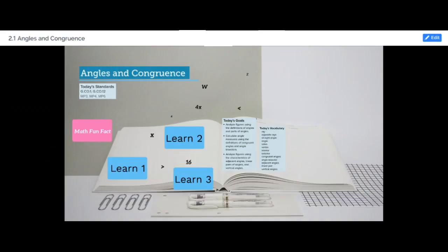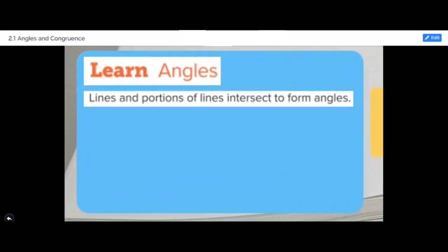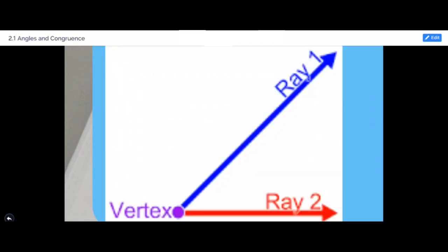In this video we are going to learn angles and how they are formed and also congruence. Lines and portions of lines intersect to form angles. As we see here we have ray 1 and ray 2, they intersect in vertex V. This is the vertex of the angle formed by the two rays.